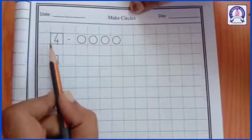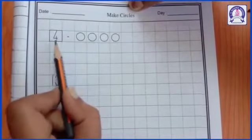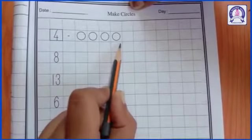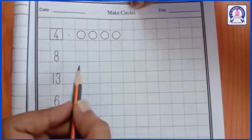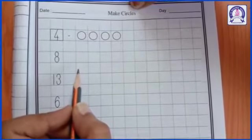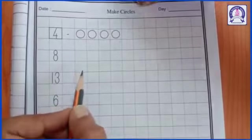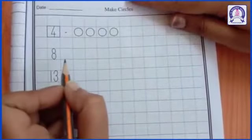First one is 4. The first example is already done. For the number 4: 1, 2, 3, 4. Then 8. We have to do 8 circles, but we make 2 circles in one box, like this.